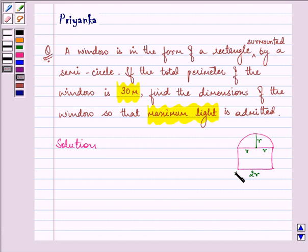Let us name this figure as A, B, C and D. Now, we need to find out the dimensions of this window so that maximum light is admitted.